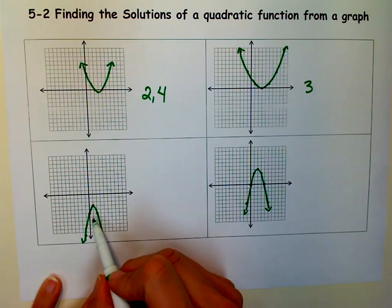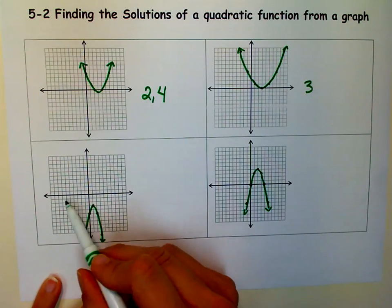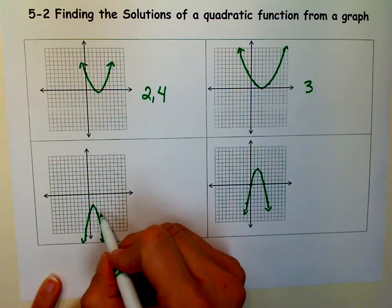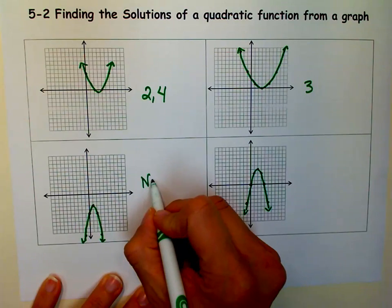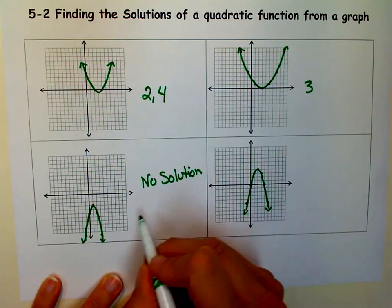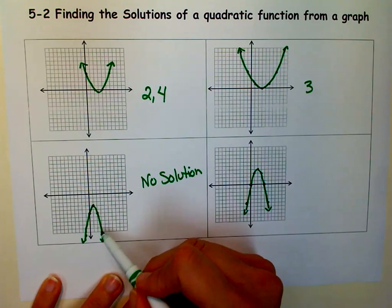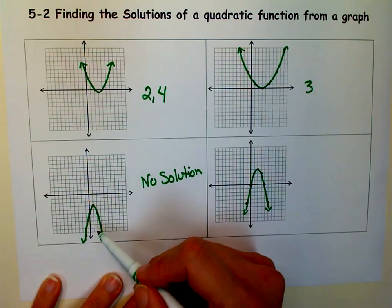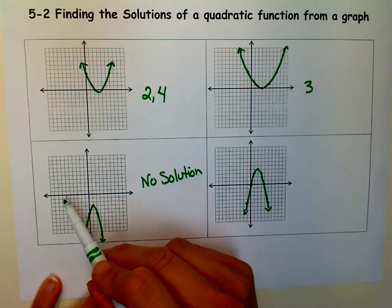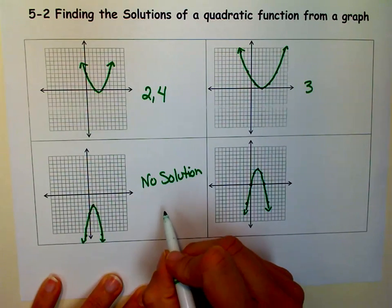And here you'll notice that it never quite makes it to the x-axis. So before you learn about complex roots, we say this has no solution. Now, even though you learn about complex roots, it still doesn't mean that it crosses the x-intercept, but there are some roots that we can use when we solve using the quadratic formula. But when you're graphing, if it doesn't cross the x-axis, it has no solution.